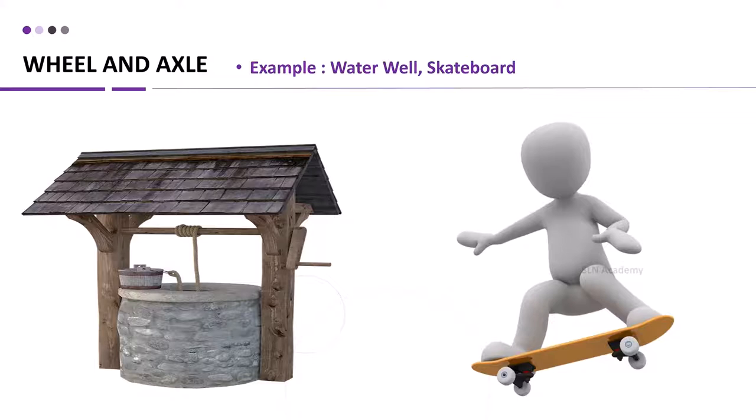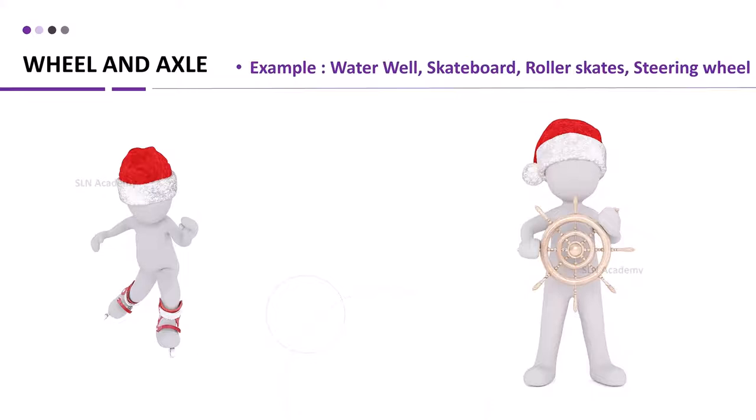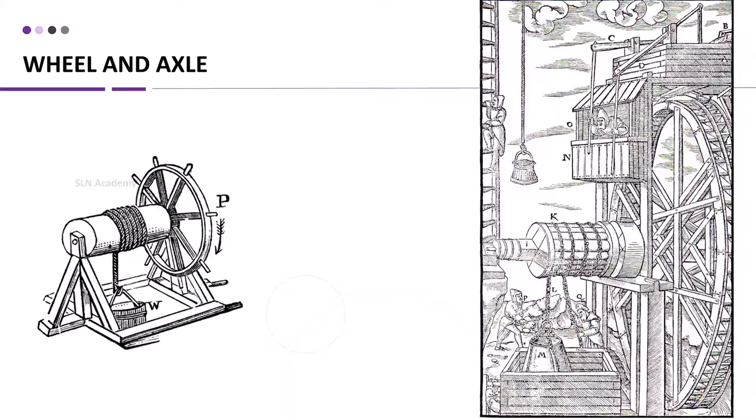Examples of wheel and axle are water well, skateboard, roller skates, wheel and axle to lift an anchor of a ship, steering wheel of a car. People are using these simple machines in many forms in olden days as well. This is one example of a water wheel driving a rope winch to lift loads in mining in olden days.